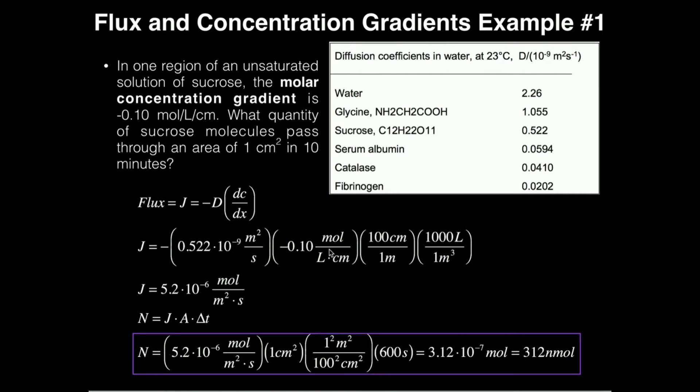And then I want to get rid of these liters. So it turns out there's 1,000 liters in one cubic meter. So that cancels liters. And then I'm going to multiply all this together. And I get the number, the flux, 5.2 times 10 to the minus sixth.